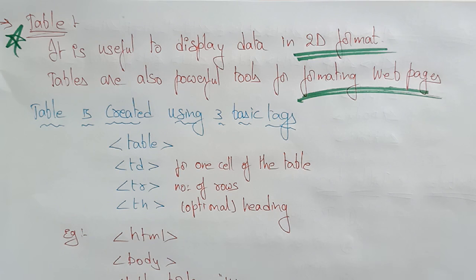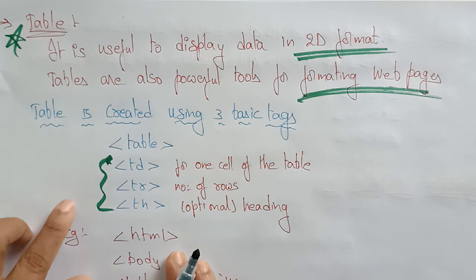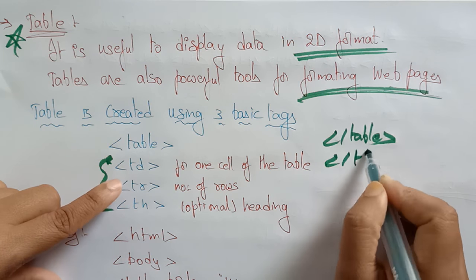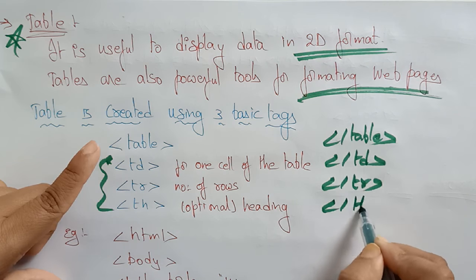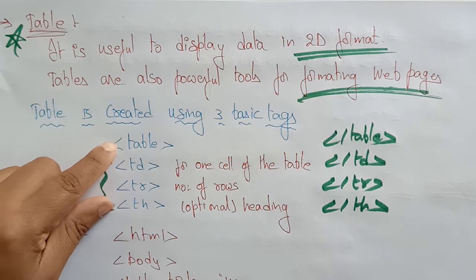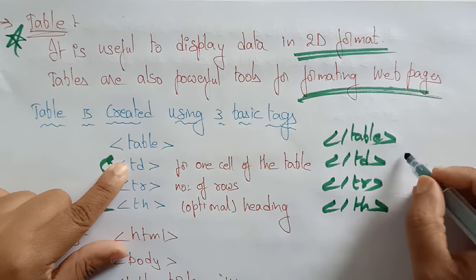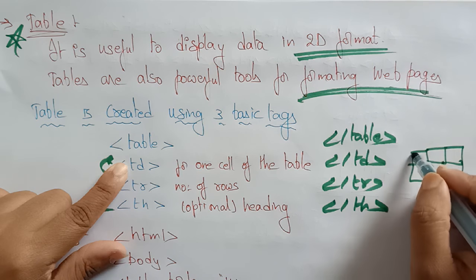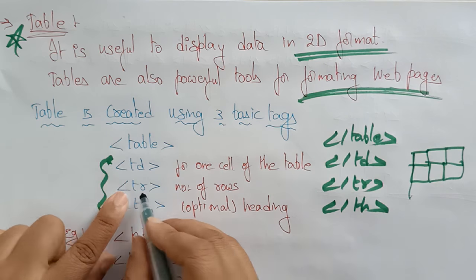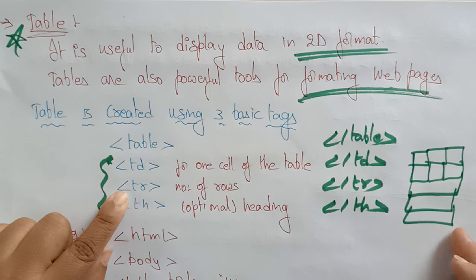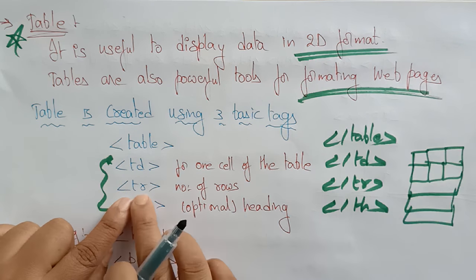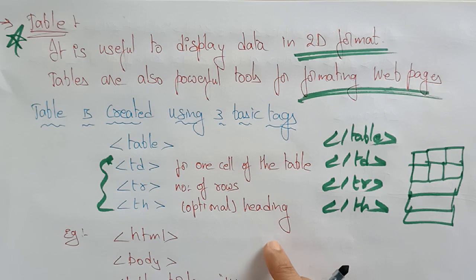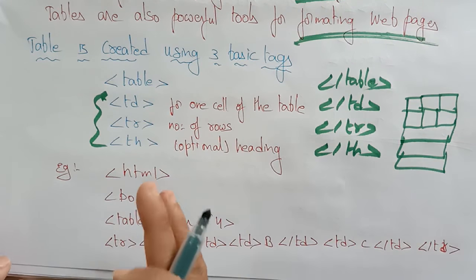If you want to create a table, you need to know the basic tags. These are the basic tags we use: TABLE — everything should have an opening and closing tag. TD is nothing but table data — one cell of data. Whenever TD is opened, it creates one cell. TR creates a row in the table. TD creates columns — one cell of the table. TR is used for the number of rows. TH is optional — if you want to represent a heading in bold format, you can use TH.